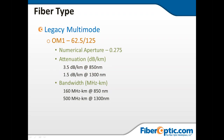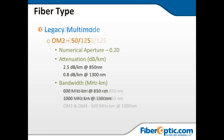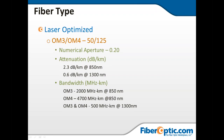Here are some basic data points for the 62.5/125 OM1 fiber: numerical aperture — how the light gets into the fiber — attenuation per kilometer, and bandwidth at various wavelengths. For OM2, you can see it's a little bit better — you can send data over greater distances with less loss. For OM3 and OM4, you're getting better performance with the laser-optimized glass.